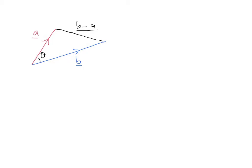The cosine rule says that the length of b minus a — that length, which we write using this notation — squared, equals the red length squared plus the blue length squared minus two times the red length times the blue length times the cosine of the angle between them. So it's just the normal cosine rule.